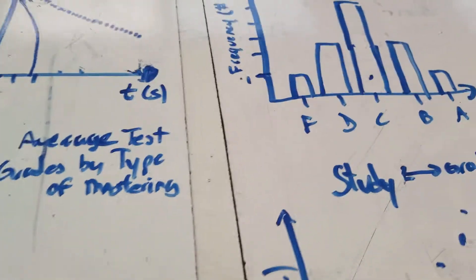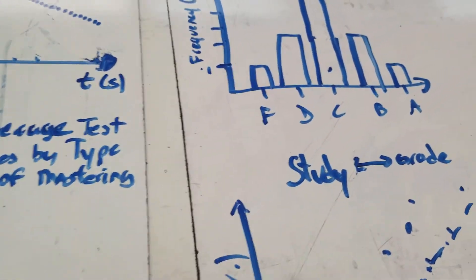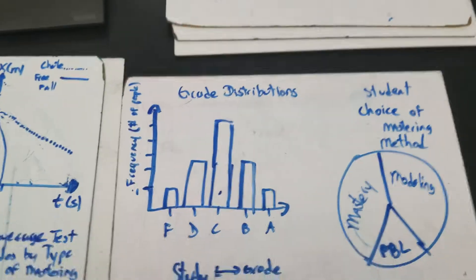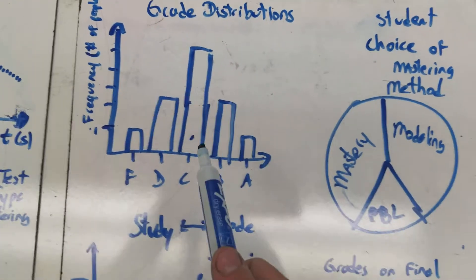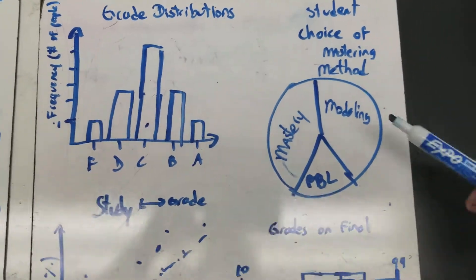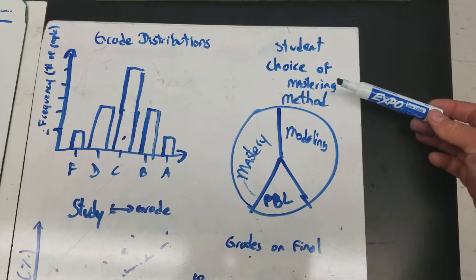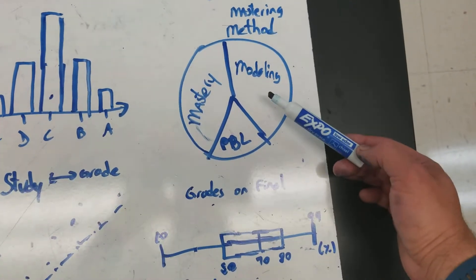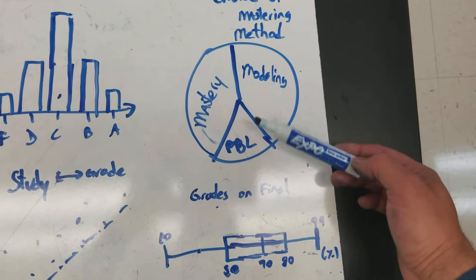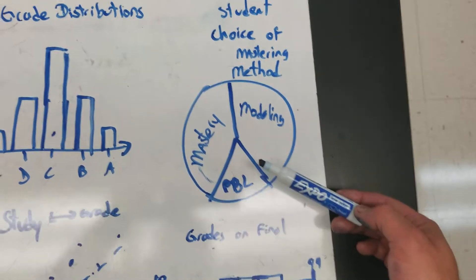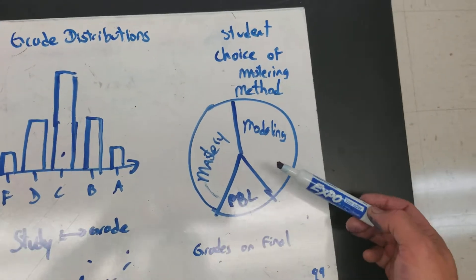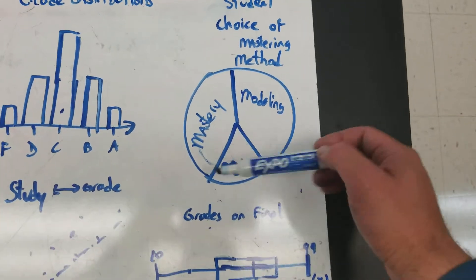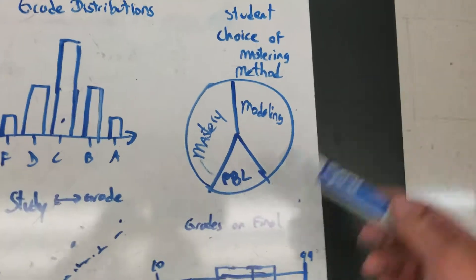Finally, you could also have graphs like bar graphs and pie charts to show distribution. So here is an example of a pie chart being used to show the choice of which mastering methods students took in a class. So you see that most students chose modeling or mastery, and a few students chose to do project-based learning. So, again, this is invented data, but it shows you very clearly the distribution of votes for something.